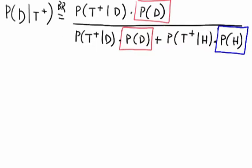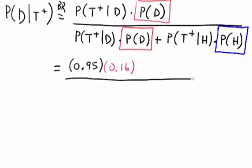So let's go ahead and fill in the blanks here. The probability of testing positive given disease is 0.95. The probability of being diseased we calculated was 0.16. Again, 0.95 times 0.16.